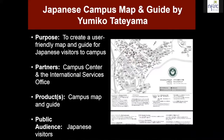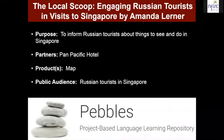Here's another example from our PBL project repository, where the purpose was that Japanese-speaking visitors to campus at the University of Hawaii at Manoa didn't really have any material to guide their visit. This particular teacher partnered with the Campus Center and the International Service Offices and had her students produce a campus map and guide as their public product, with Japanese visitors as the public audience.